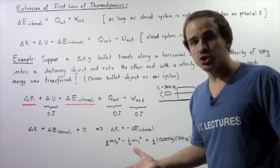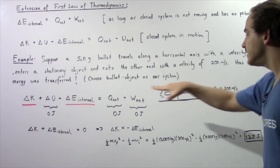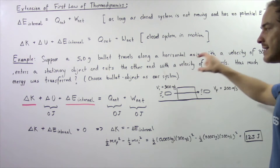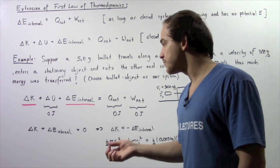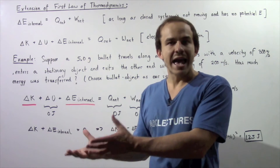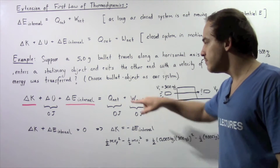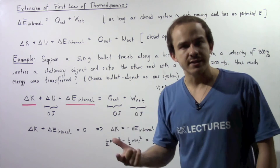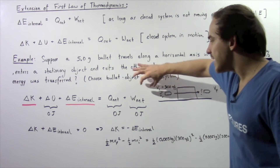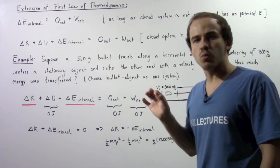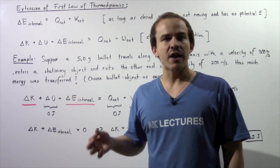Because our object is in motion, we have to use the extended equation. Because the object is on the same horizontal level at the beginning and end, the change in gravitational potential energy is zero joules. Because the surroundings and our bullet-object system are at the same exact temperature, no energy is transferred as heat. And because no outside forces are acting on our bullet-object system, W net is also zero. So we only need to consider the change in kinetic energy and the change in internal energy.